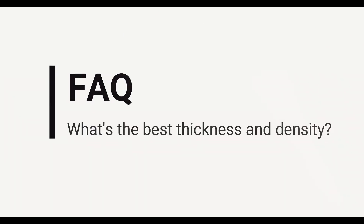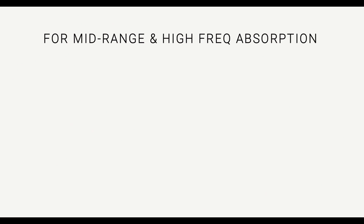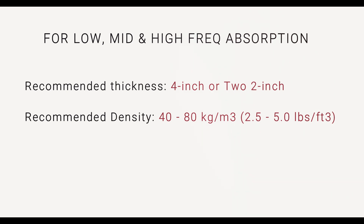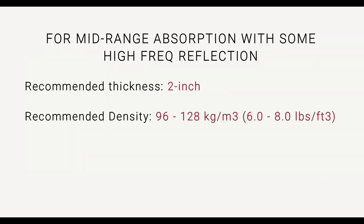The frequently asked question is: what's the best thickness and density to use? This depends on your goal. If you're looking to mainly absorb mid-range and high frequencies, use a 2-inch material with a density anywhere between 40 to 80 kilograms per meter cubed. If you're absorbing across all three bands, use a 4-inch material with a density from 40 to 80 kg/m³ — you can also use two bats of 2-inch to make a 4-inch thickness and get the same performance. If you want to absorb the mid-range while reflecting some high frequencies, use a 2-inch material with a density between 96 to 128 kg/m³.